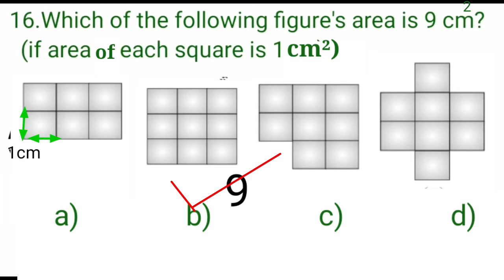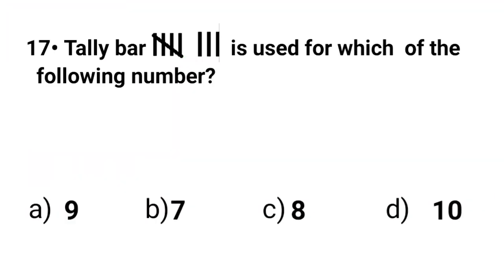So let's take option B. Now, question number 17 is, the given tally bar is used for which of the following numbers? Dear students, in this tally bar, the fifth mark crosses diagonally the four marks to show a group of five. And the three individual bars show three. So, 5 plus 3, 8 is the number shown by the tally bars.